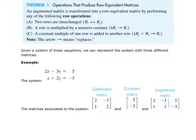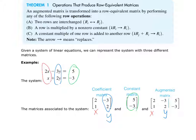If we are given two equations — 2x minus 3y equals 5, and x plus 2y equals negative 3 — we can write this in three different types of matrices: the coefficient matrix, the constant matrix, and the augmented matrix. The first column holds the coefficients on the x's, the second column holds the coefficients on the y's, and the last column holds the constants, which are the answers to each equation but not the answers to the system.